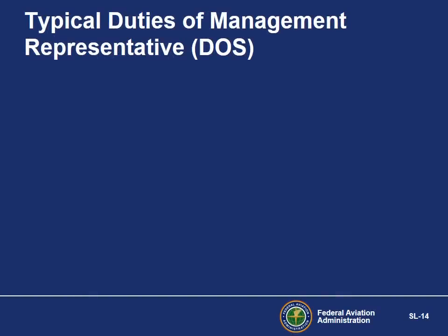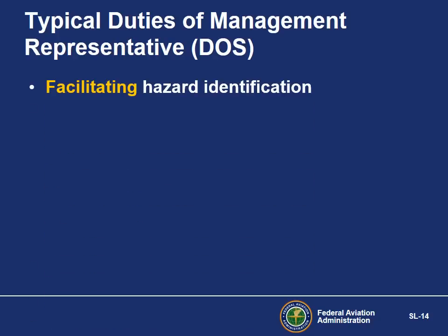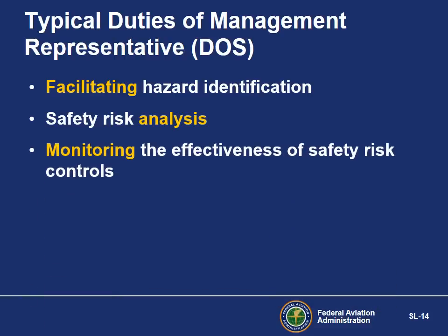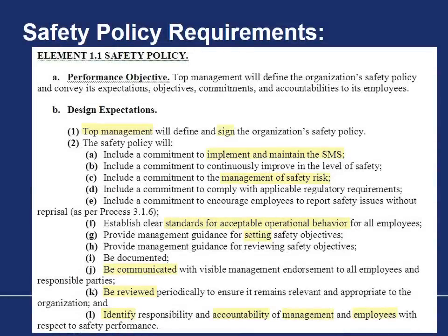Technical management identifies the hazard. The director of safety facilitates hazard identification by providing expertise, focusing the attention, and defining hazard versus risk. Management assesses risk and makes the decisions on acceptability. The director of safety provides management the decision-making tools from analysis of the data. The director of safety also assures the effectiveness of risk controls by monitoring the application of those controls. By signing the safety policy, top management is committing to an exhaustive list of expected items, leaving no doubt as to who owns the SMS.